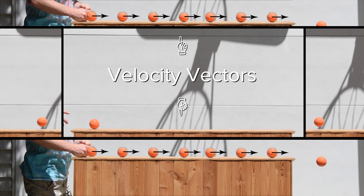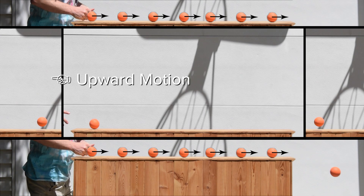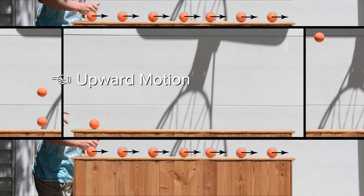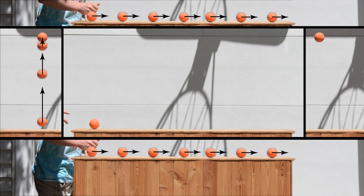Now let's look at just the upward motion of the ball in the y direction. Billy, what should that velocity vector look like? Well, we know the ball must start with an upward velocity in the y direction, and because the acceleration is downward, that velocity will decrease as the ball goes upward. So the magnitude of the velocity vector will decrease and it should eventually reach zero at the very top.